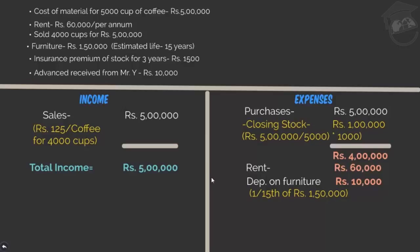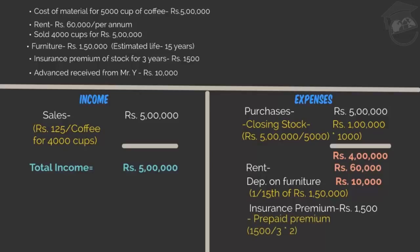Next he records the insurance premium of Rs. 1,500. He says that because I paid for 3 years, 2 years is my advance payment. So we need to deduct the prepaid premium for the next 2 years. Total premium Rs. 1,500 ÷ 3 = Rs. 500 per year, and Rs. 500 × 2 = Rs. 1,000 prepaid is deducted, leaving Rs. 500 as the current year's expense.